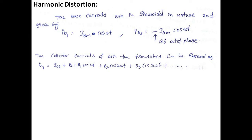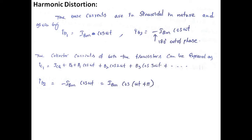The collector current expression for transistor 1 is given by both a DC component ICQ plus B0, and AC components involving cos(ωt). The AC component includes B1·cos(ωt) and higher harmonic terms. Similarly, we find IC2 by substituting IB2.